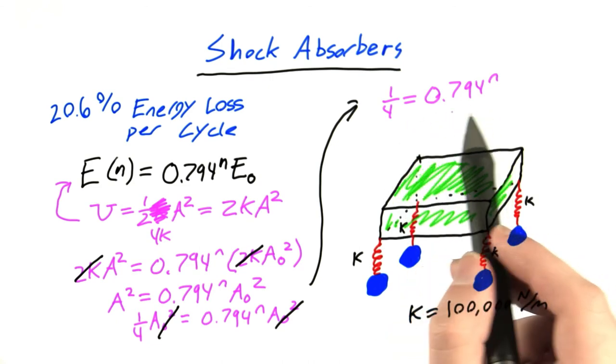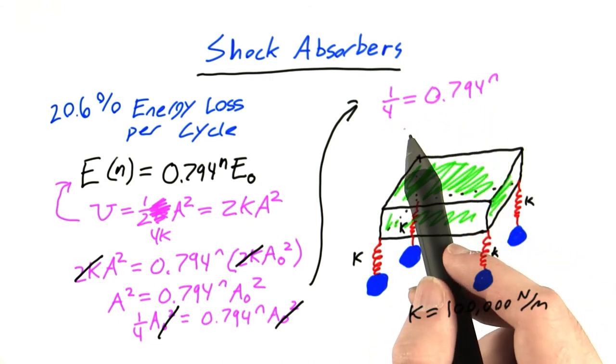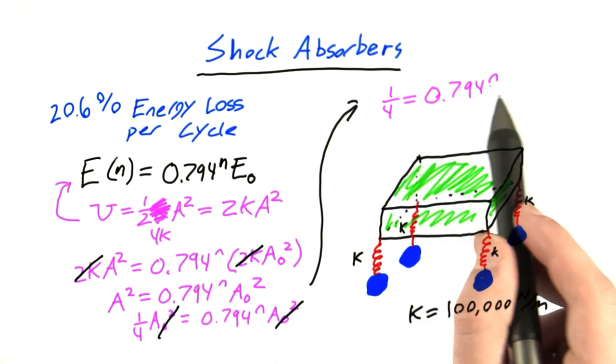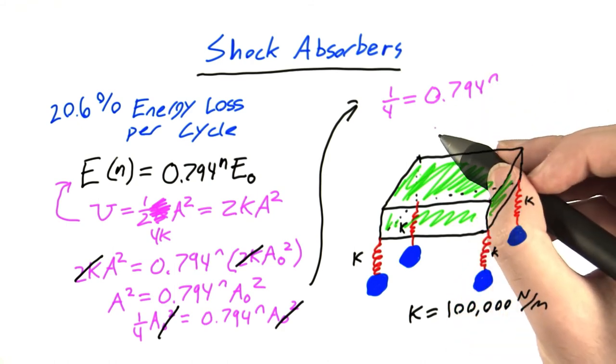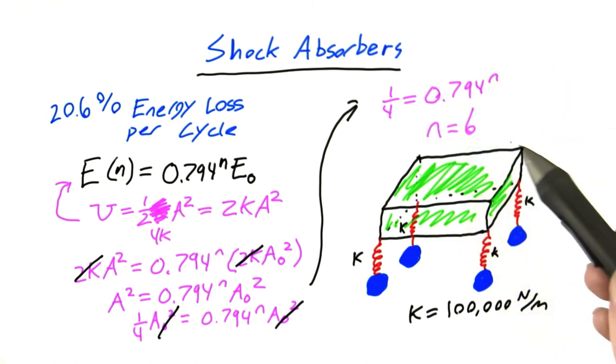Now depending on how much math you've had, you may recognize that you can solve this equation by using something called a logarithm. But we don't actually have to use logarithms here. It turns out that if you go through trying different values for n, different integer values in particular, you'll find pretty soon that the solution to this equation actually is n equals 6.